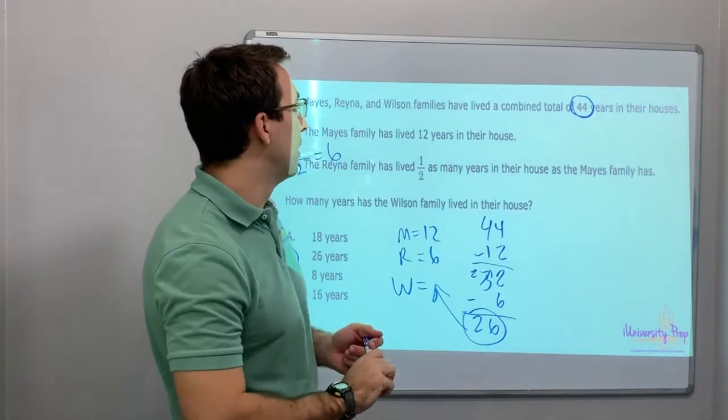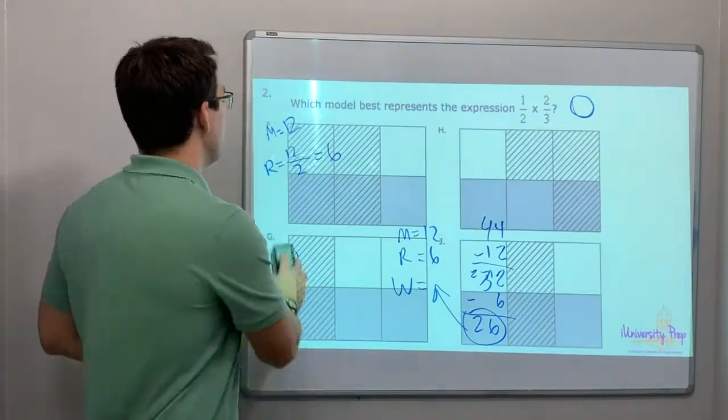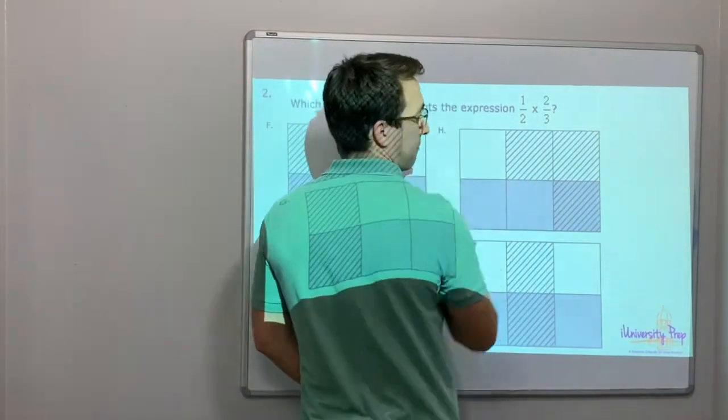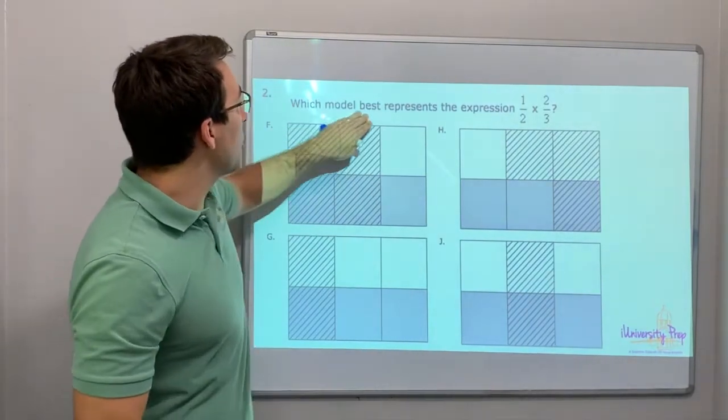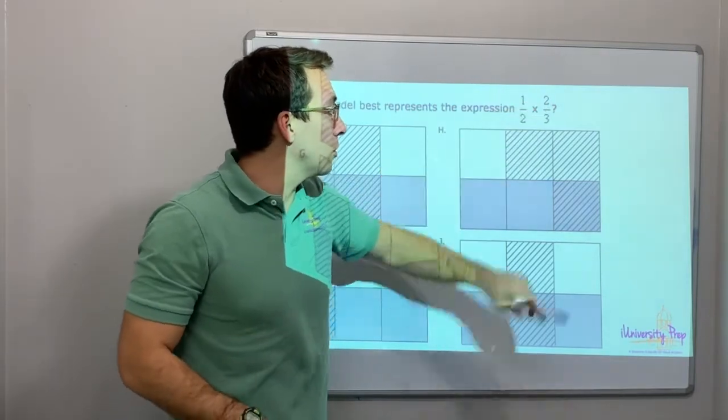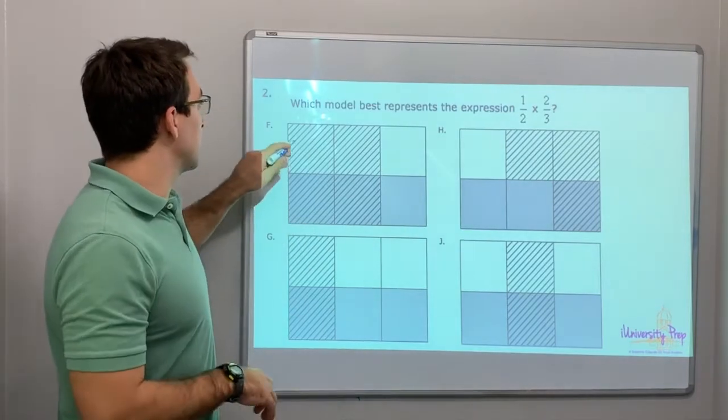Watch this. Here's a pictorial model, a graph for you. This is from the example earlier, right? Which model best represents the expression one-half times two-thirds? Let's look at this.